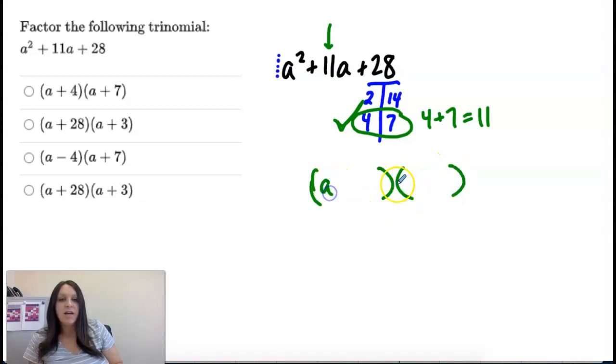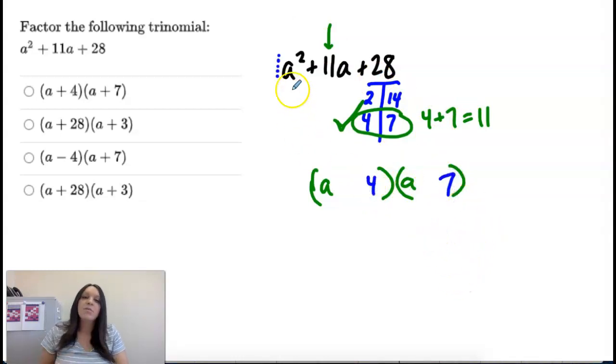So I have a and a, and then the 7 and 4 come out here. And your last step is sometimes you have to change some signs. One might be plus, one might be minus. They both might be plus. For this particular one, we have all addition signs. So these are going to be addition signs. And the nice thing about these is you can check your answers.